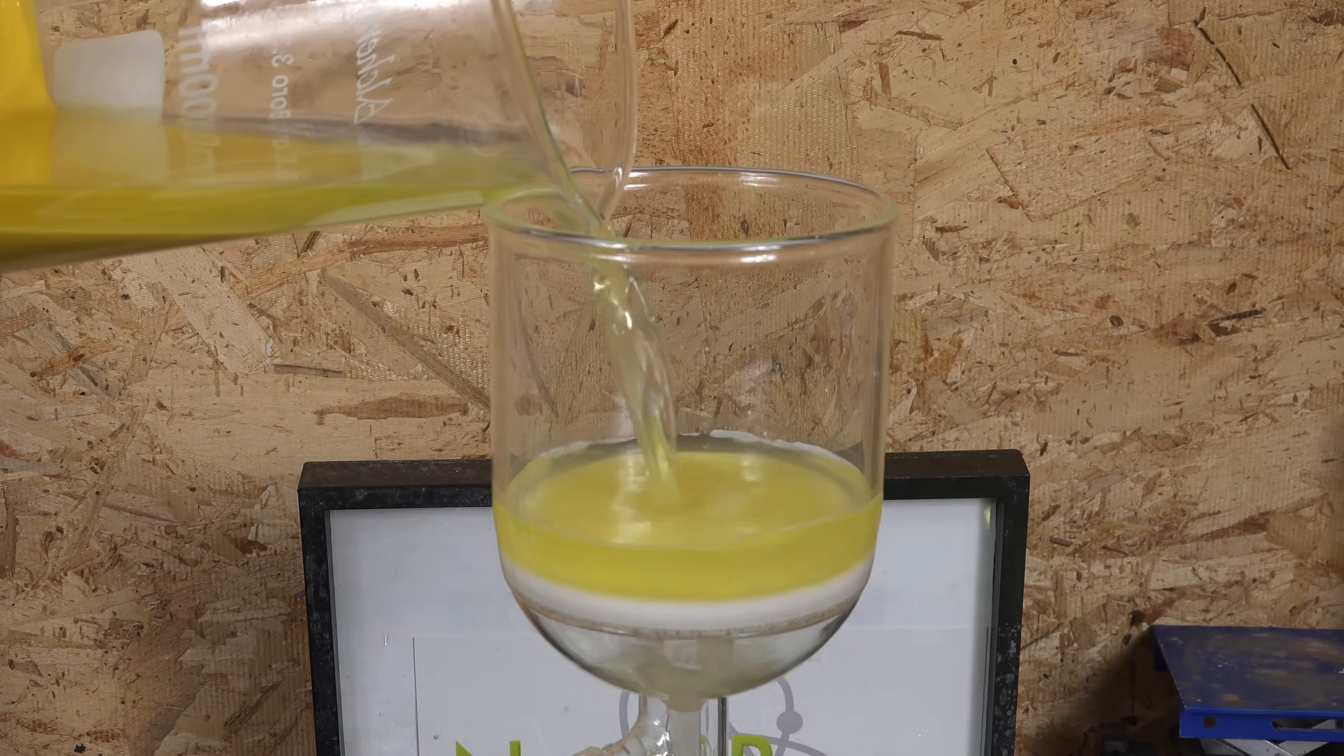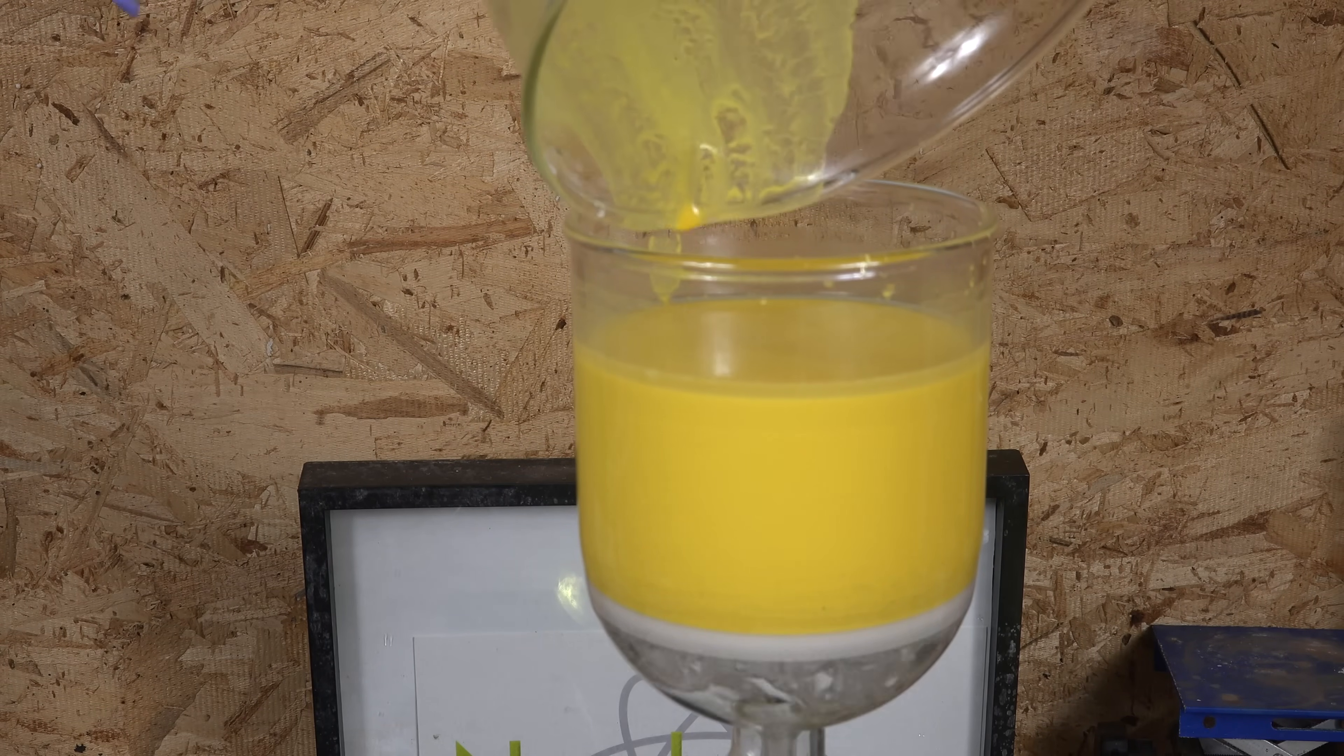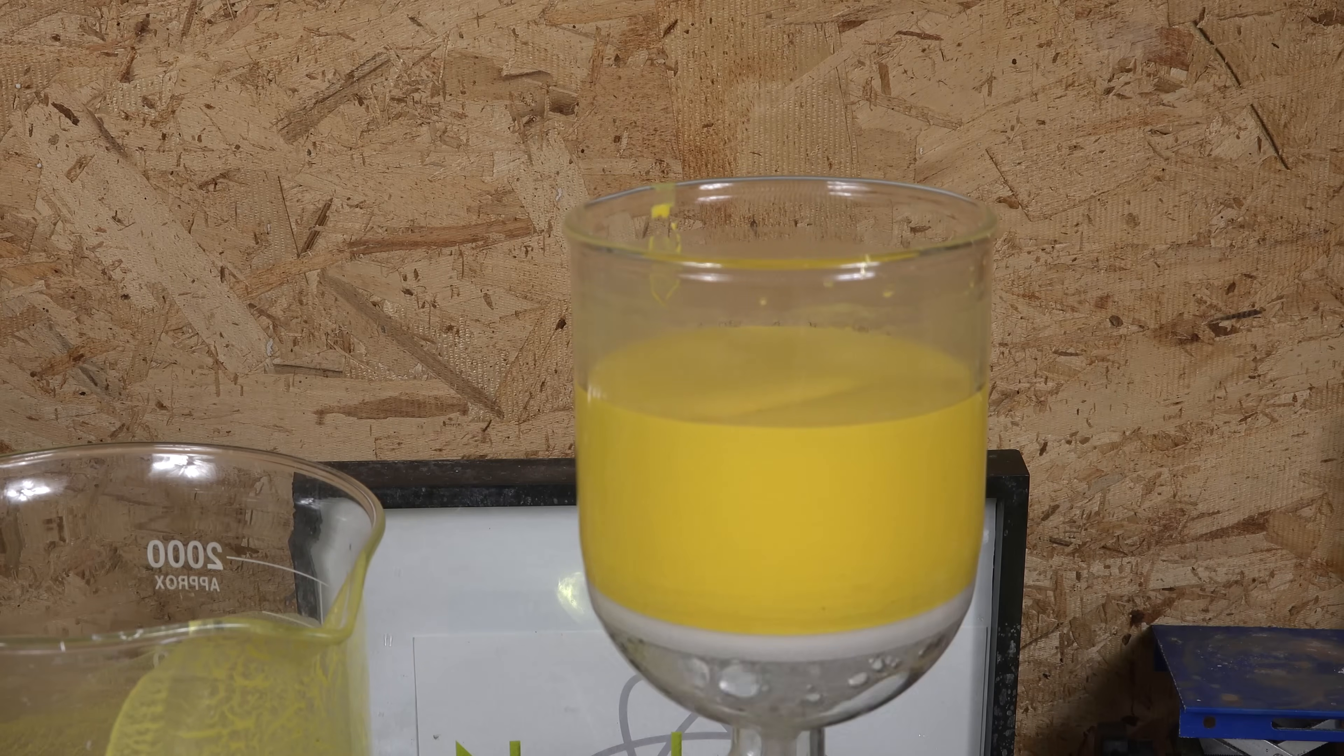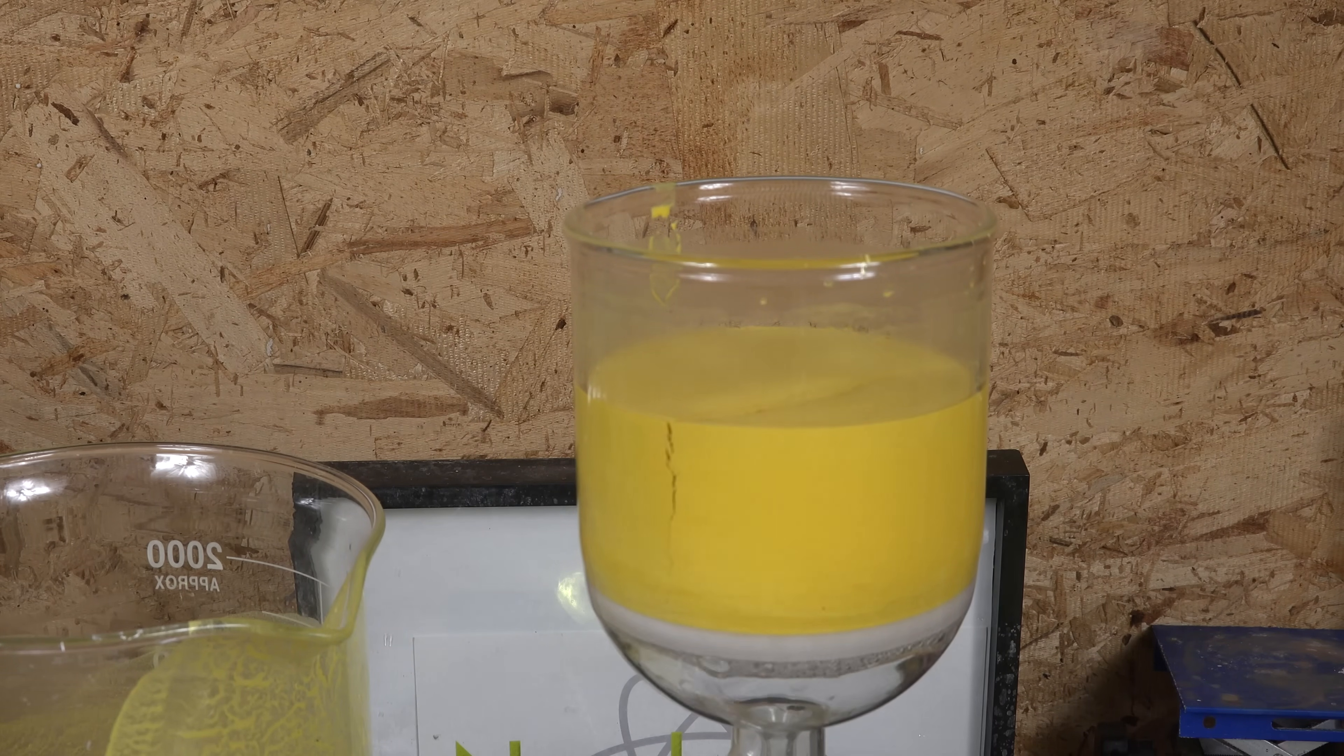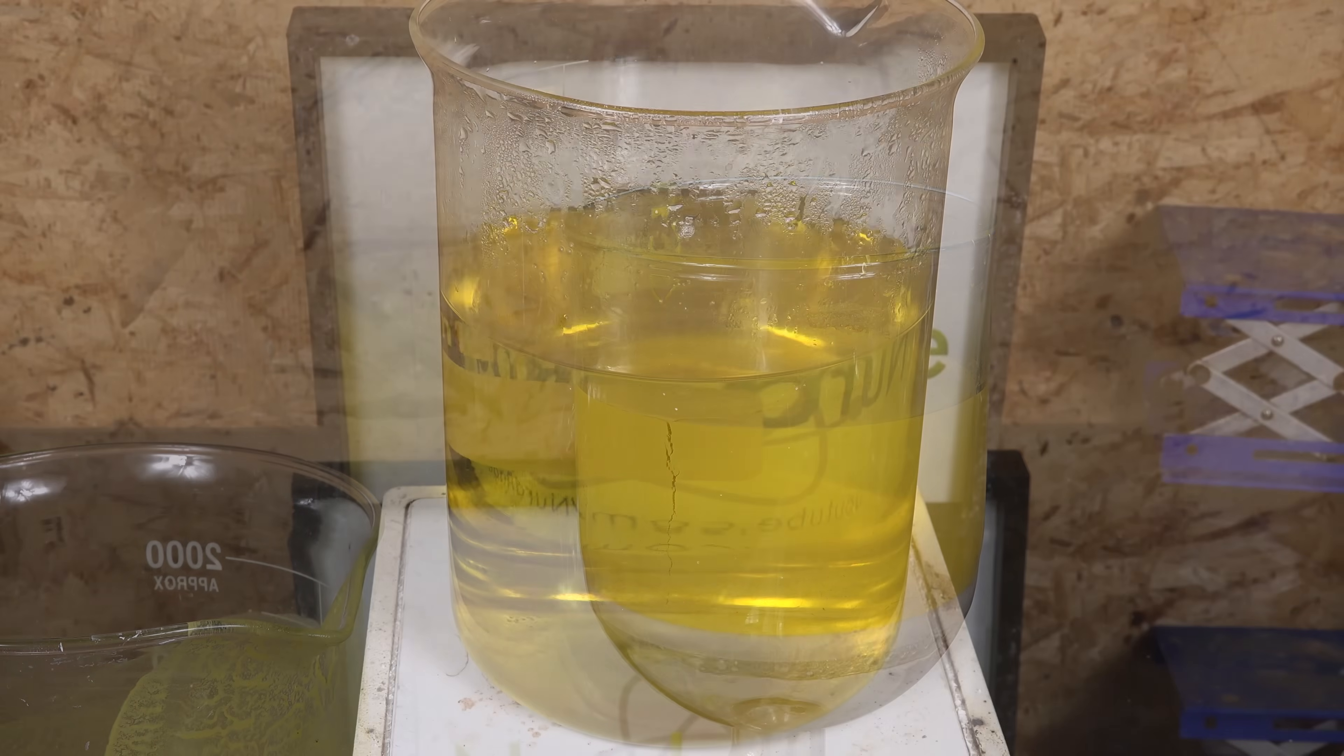I find it much easier to decant and filter rather than filtering these slurry directly. The residue is iron oxalate and is useful in itself for making such interesting compounds like pyrophoric iron. So you can save it if you want, although it is very impure containing lots of unreacted oxalic acid, so keep that in mind.